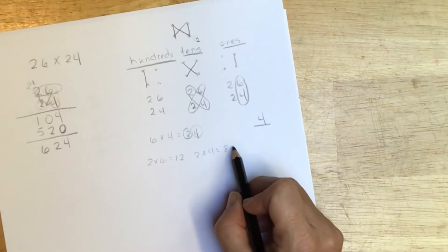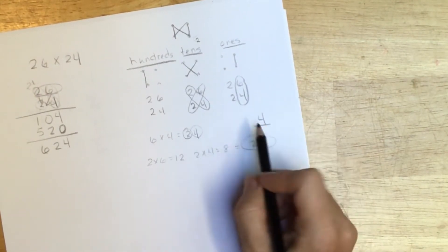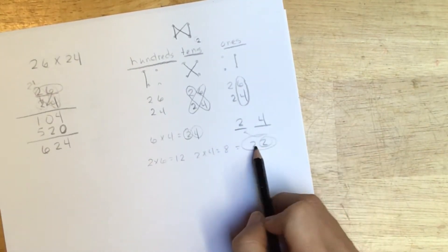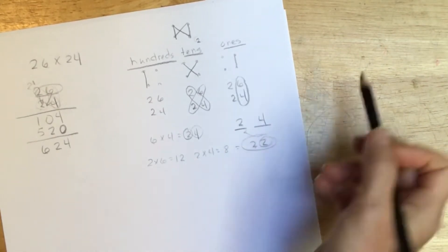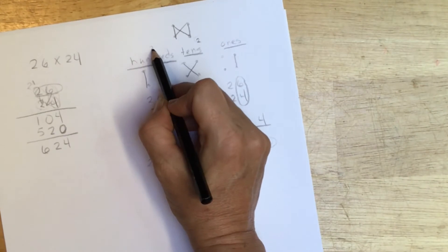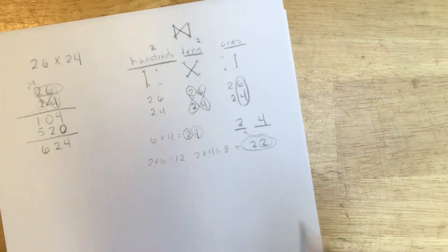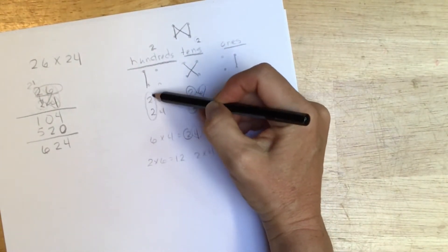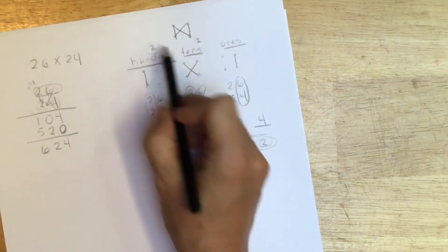Then 12 plus 8 is 20, but I have this other two up here, so that gives me 22 total. This two will go in the tens place, and these other 20 tens, which is 200, this two will be placed over here to be added to the other hundreds. To do the hundreds, you multiply these two here, so two times two is four, and then plus this other two would give us six hundreds. So our answer is 624.